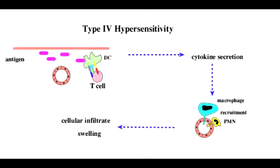What is type 4 hypersensitivity? Type 4 hypersensitivity, which is also known as delayed T-cell mediated hypersensitivity, is the only hypersensitivity that is not antibody mediated, but rather a cell mediated reaction. In this hypersensitivity, sensitized T-lymphocytes will encounter an antigen and then cause a release of lymphokines, which leads to macrophage activation.